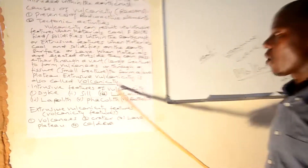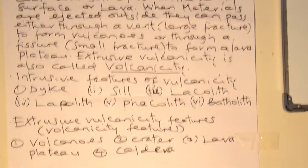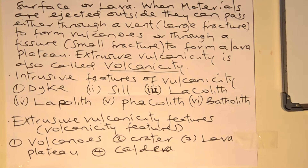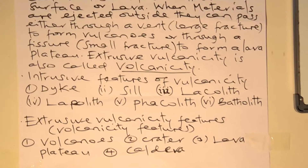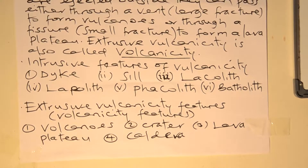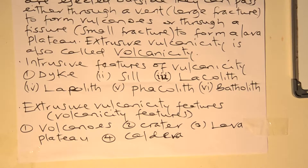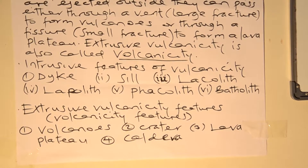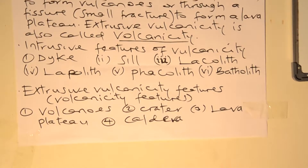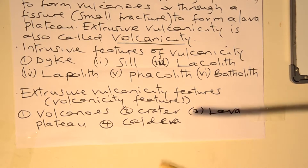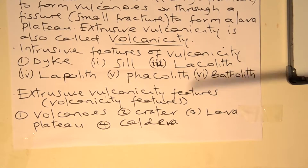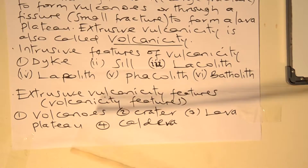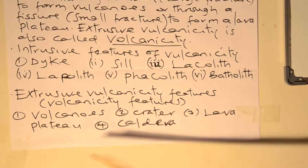Intrusive features of vulcanism: wherever the eruption of molten material takes place and causes the formation of different features within the crust. Let us start with the first feature, which is called the dike. Before going to the description of dike, there are also extrusive volcanism features such as crater, rift, plateau, and caldera.